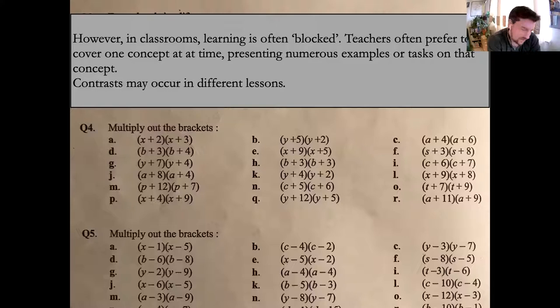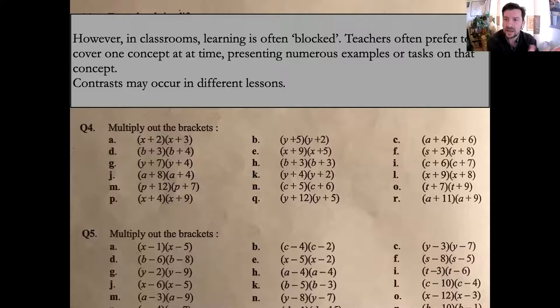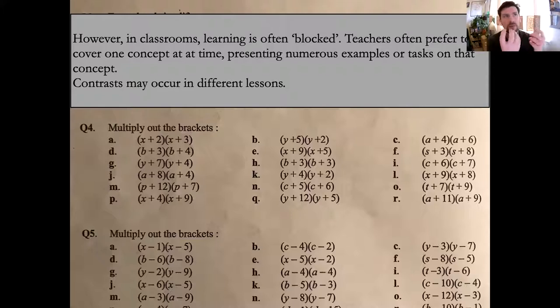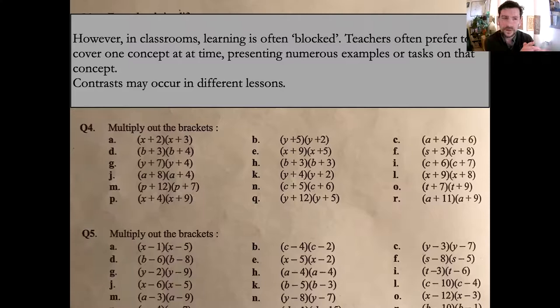Despite all this evidence, interleaving is not necessarily what happens in classrooms. My son's maths homework is a good example: you often see a lot of blocked practice — many problems of the same kind one after another. Contrasts do exist but may occur in different lessons, making it harder for the learner to recognize when to use one strategy versus another. This may be influenced by behaviourist thinking — the idea that we need to overlearn or reinforce — rather than thinking about conceptual learning and what we know from theories of long-term memory.